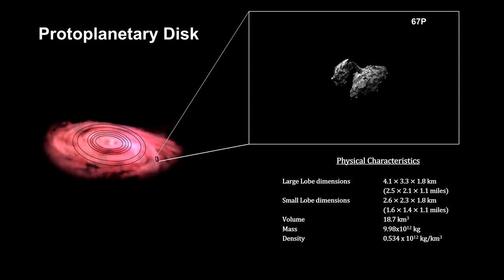Comet 67P, visited by the Rosetta mission in 2014, is thought to be a combination of two planetesimals that bound together in a slow-speed collision. Their combined mass is just under 10 trillion kilograms.